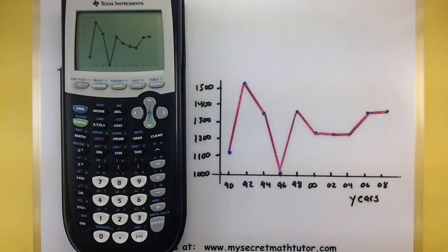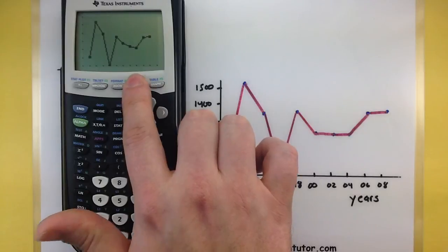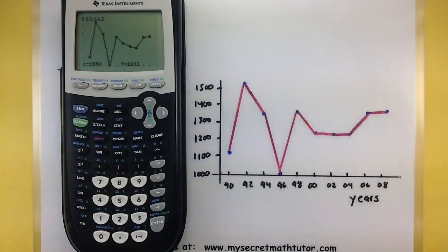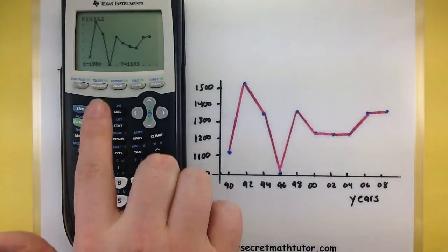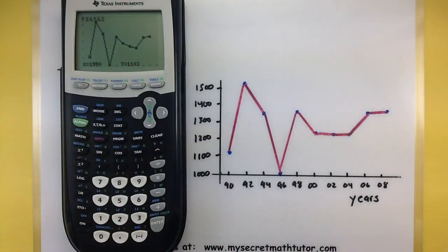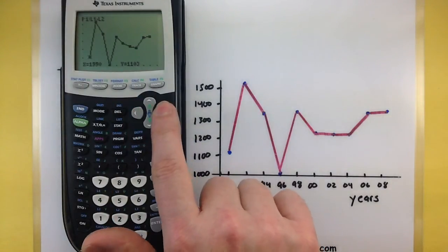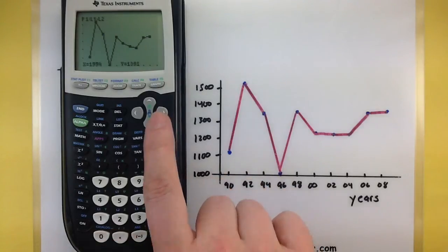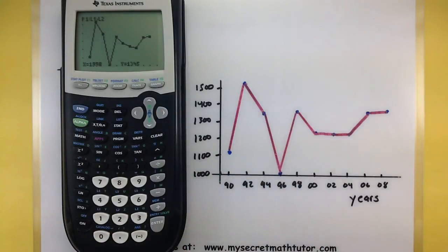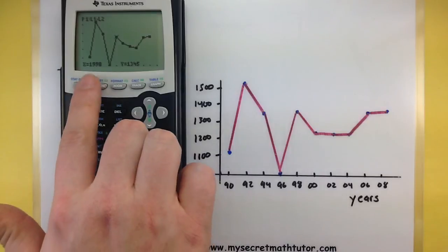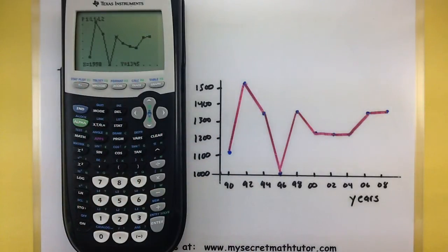Now if you're ever curious as to what a specific data value is you can use the trace button to walk through all of these individual points. So let's go ahead and hit that trace button and you'll see the very first data point is listed, it says it's 1990 and there was one thousand one hundred and three students in there. If you press the right or left arrow buttons it'll walk through these data points one at a time so you can see the other values. So now I'm over here at 1998 and there was one thousand three hundred and forty-five students.